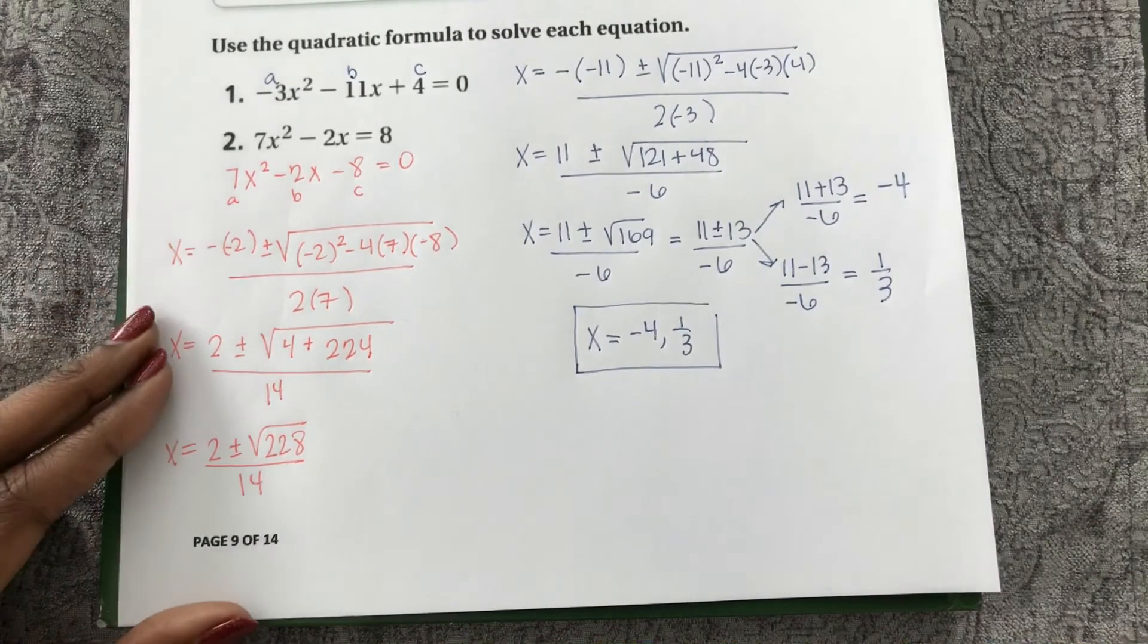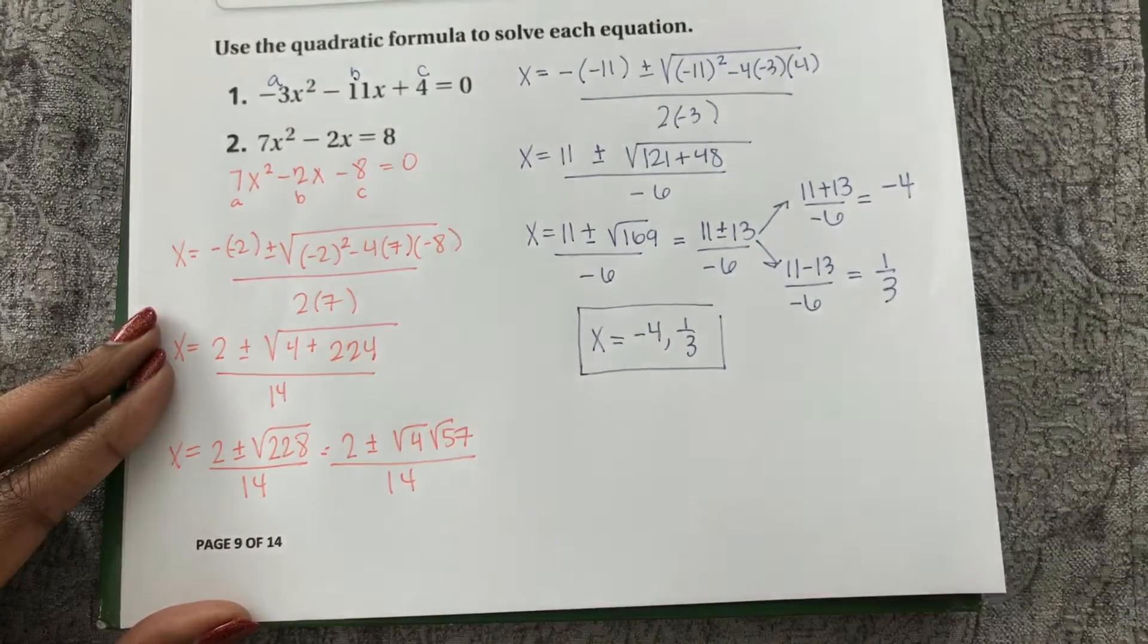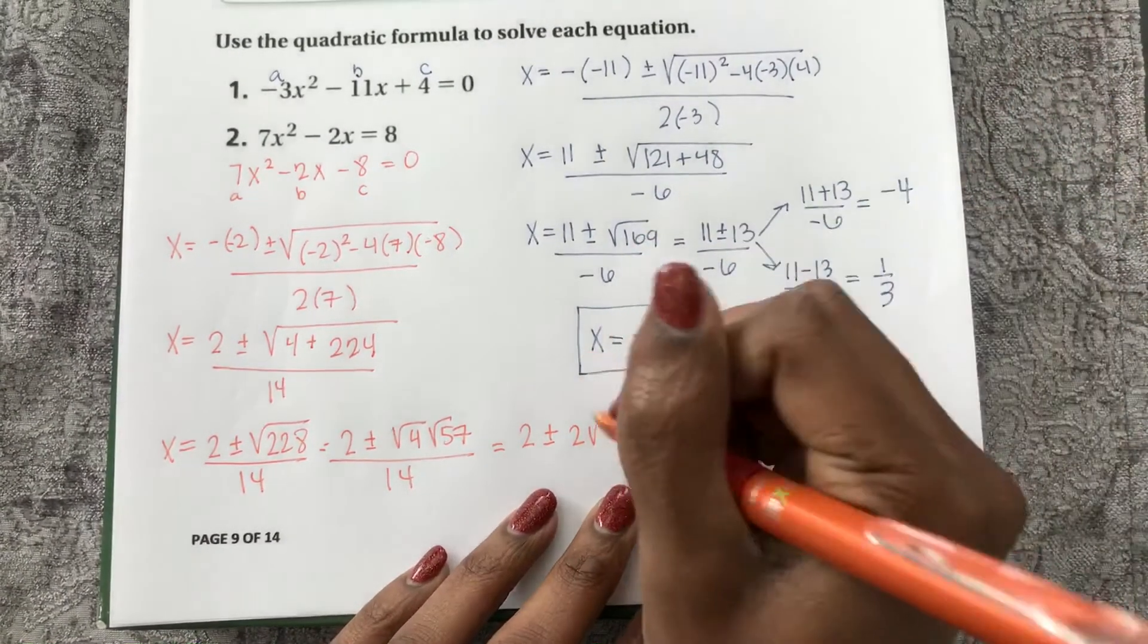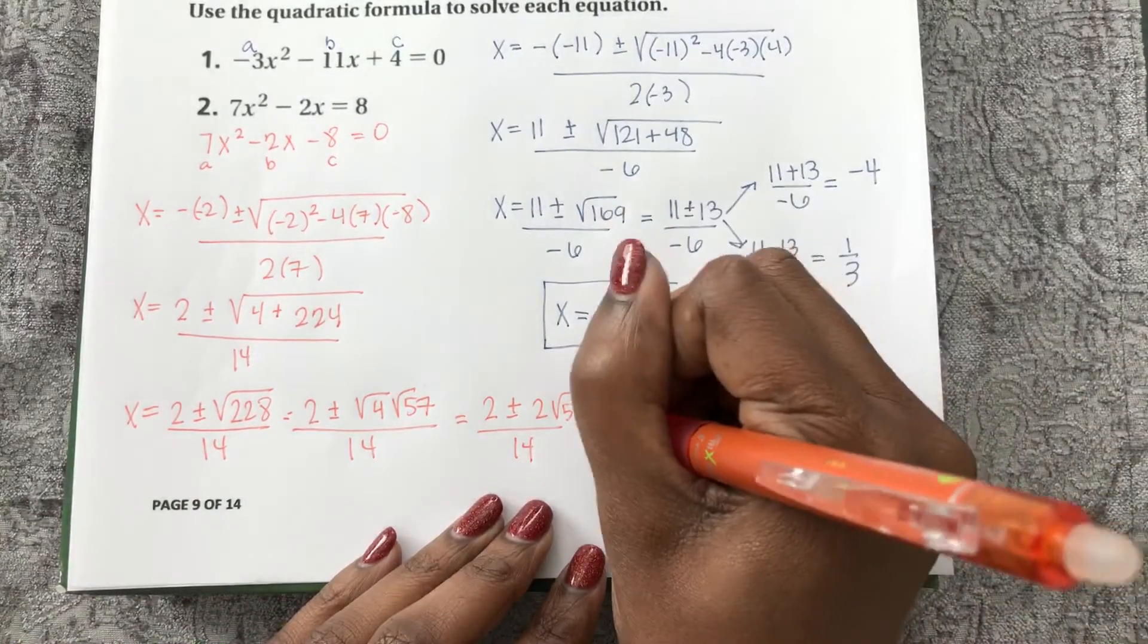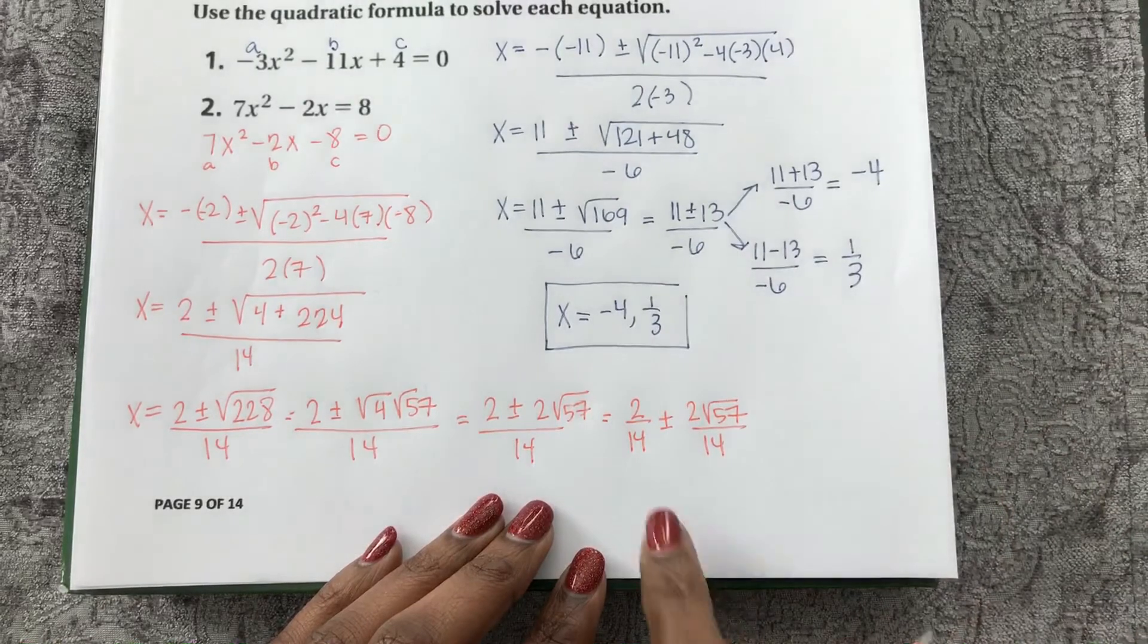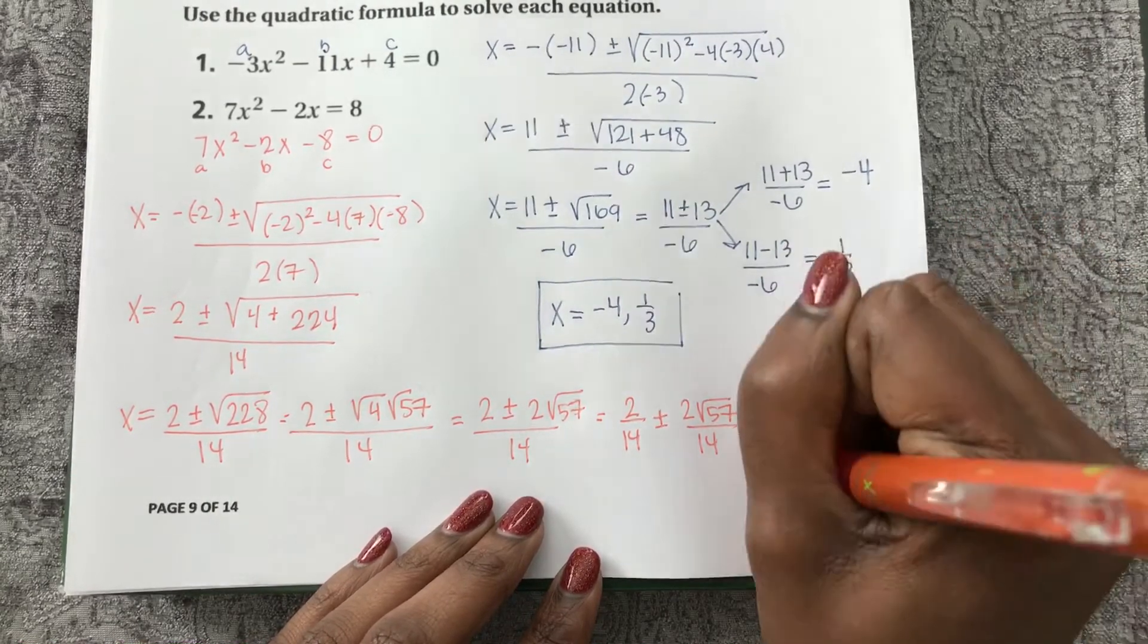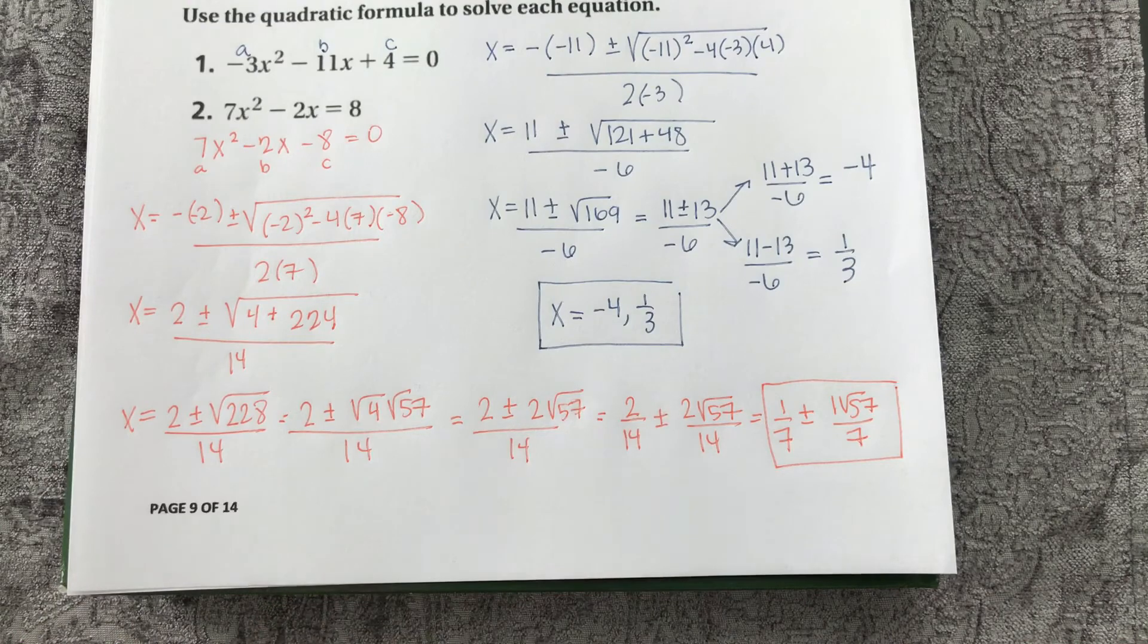So 228, I can break down to be square root of 4, square root of 57, all over 14. That's 2 plus or minus 2 square root of 57 all over 14. If we think about how to simplify this, it's 2 over 14 plus or minus 2 square root of 57 over 14. Well, 2 over 14 reduces to be 1 seventh plus or minus 1 square root of 57 over 7. That would be completely simplified. I simplified my radicals and I simplified my fractions.